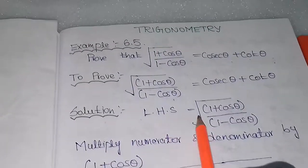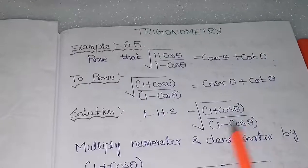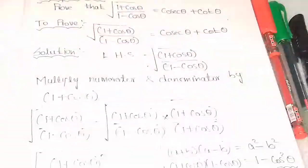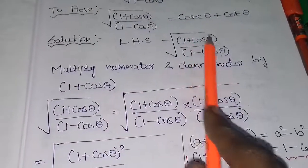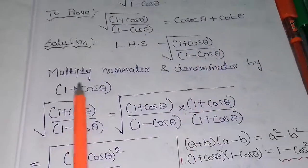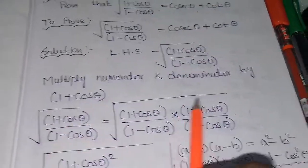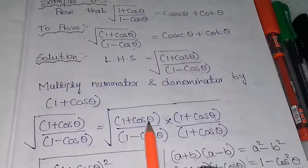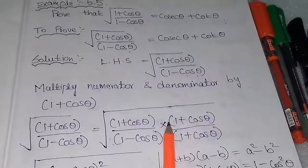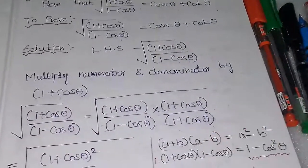This is the solution part. Left hand side is equal to the square root of (1 + cosθ) / (1 - cosθ). We multiply both the numerator and denominator by (1 + cosθ), giving us (1 + cosθ) / (1 - cosθ) multiplied by (1 + cosθ) / (1 + cosθ).